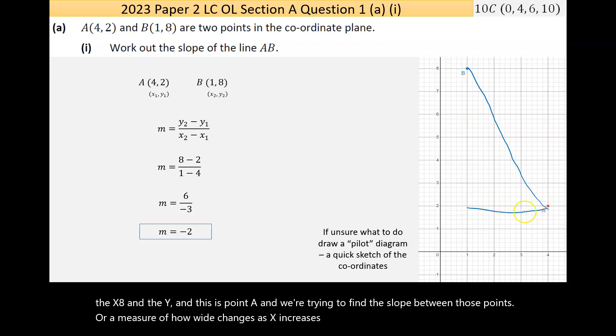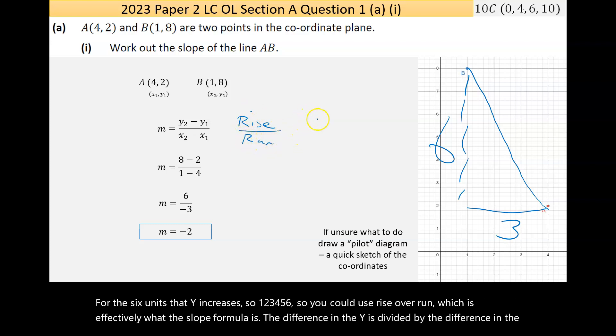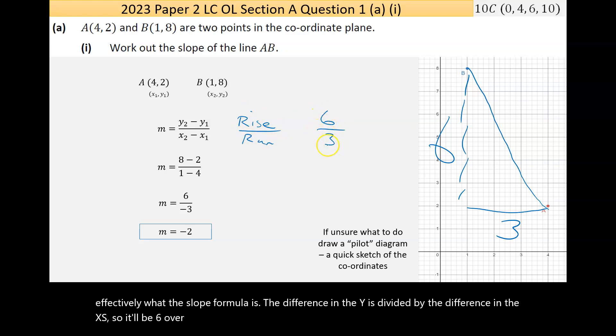X increases by three units for the six units that y increases. So one, two, three, four, five, six. You could use rise over run, which is effectively what the slope formula is - the difference in the y's divided by the difference in the x's.